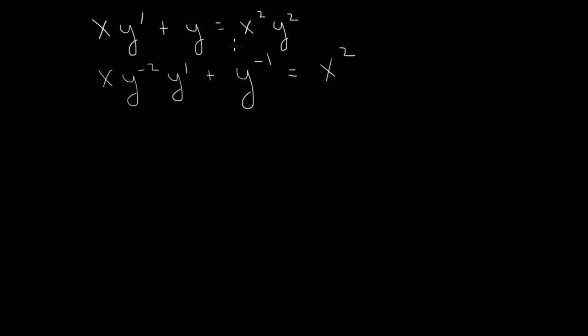And we want to convert this equation to a linear equation. So we need to change variables. This is the term here we want to be linear. So we let u equals 1 over y, or y to the minus 1.